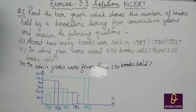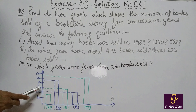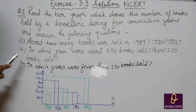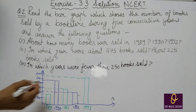Now question number two. Read the bar graph which shows the number of books sold by a bookstore during five consecutive years and answer the following questions. About how many books were sold in 1989? Bar graph आपके पास given है, आपको observe करके answer करना है. First one: about how many books were sold in 1989? So you will write: in 1989...